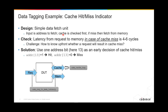The problem is how do we know upfront whether the request will result in a miss or not. This is where we use data tagging. We're going to use one address bit — we choose arbitrarily bit 13 — as an early decision of whether there will be a cache hit or miss. If bit 13 is set, then it's a hit; if bit 13 is zero, that means a miss.